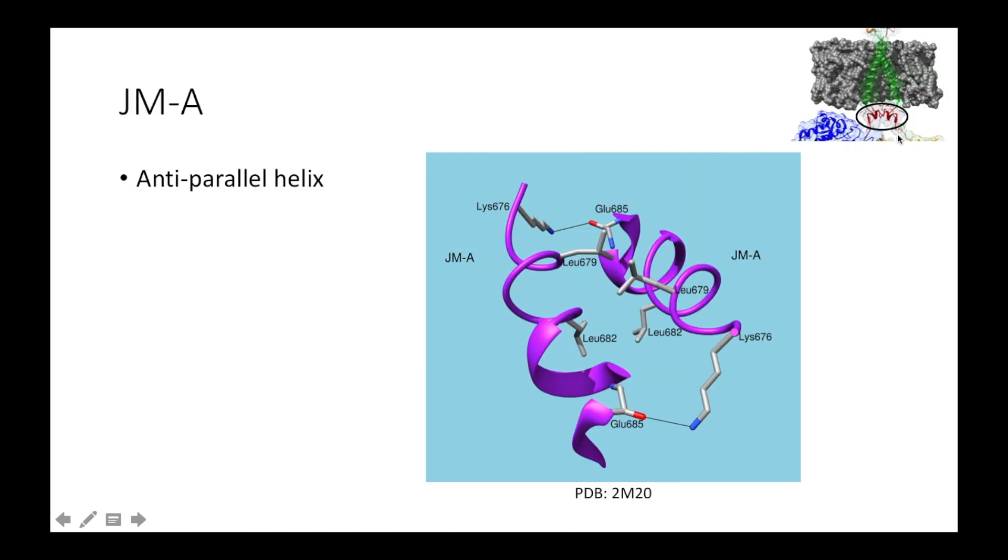Here is a close-up of the anti-parallel helices in the JMA region of an EGFR dimer. We can see hydrophobic residues in the center interacting favorably with each other, and lysine residues forming potential hydrogen bonds with carbonyl groups in the peptide backbone.